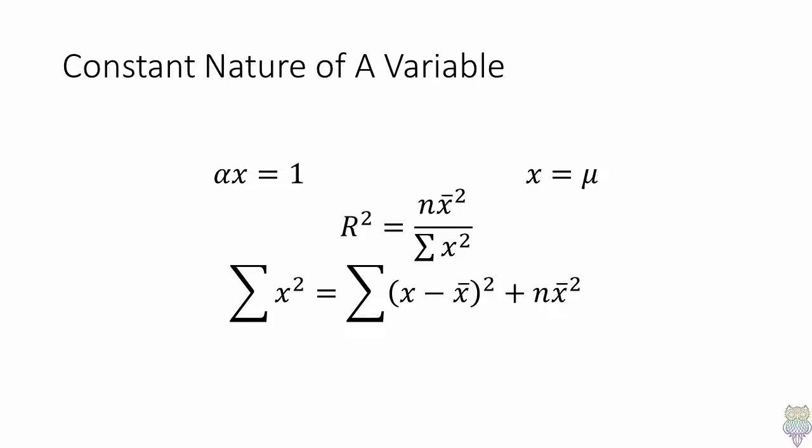Therefore, as r gets closer to 1, the variable becomes more constant, and as r gets close to 0, the variable becomes more variant.